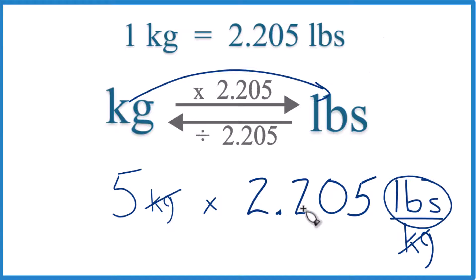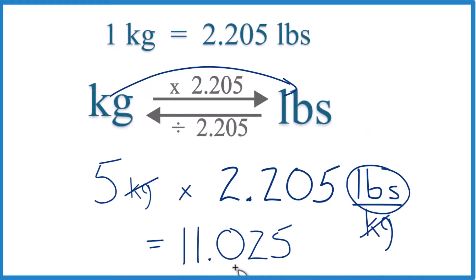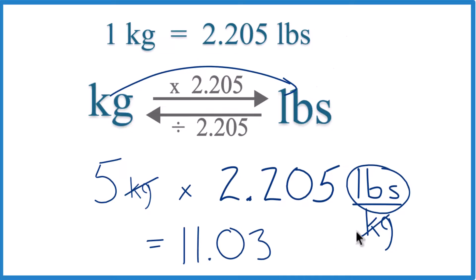So 5 times 2.205 pounds, that equals 11.025. Let's round that to 11.03. And the units, that's the pounds there that's left.